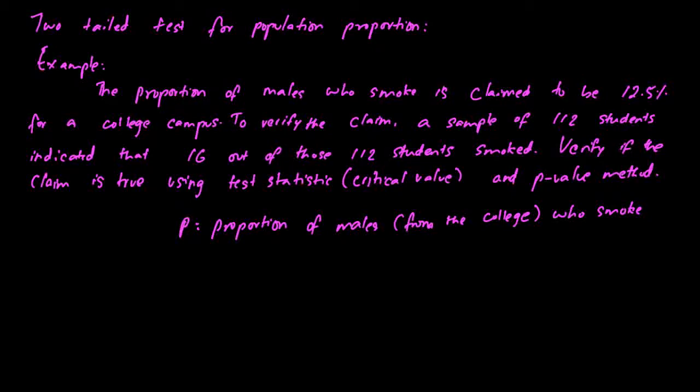This is a problem for two-tail test for population proportion. The example here is to test whether the claim about the proportion of males who smoke for a college campus is 12.5%. To verify the claim, a sample of 112 students is obtained, and we found that 16 out of those 112 students smoked.